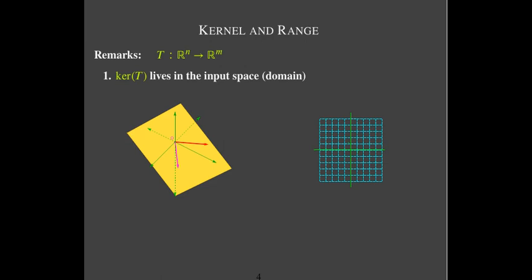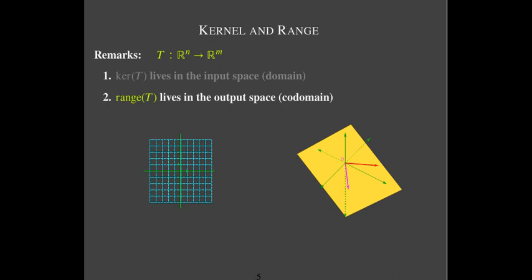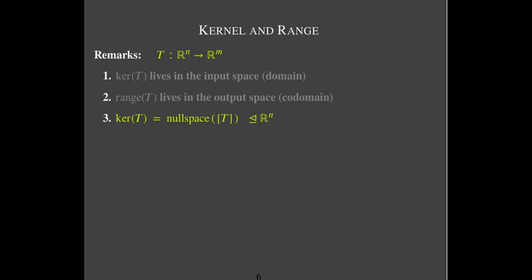The kernel of T lives in the input space — it is a subset, in fact a subspace, of Rn, the input space or the domain. While the range lives in the output space, it's going to be a subspace of the codomain, or subspace of Rm in our notation here.